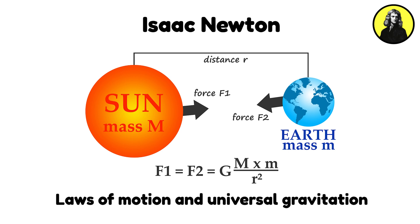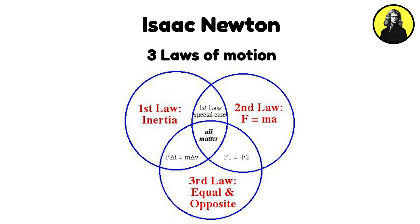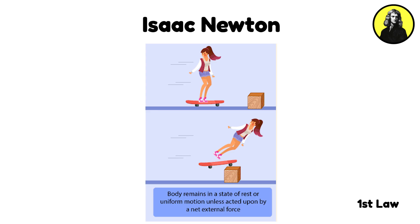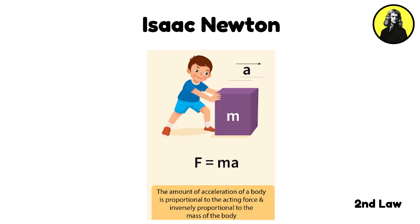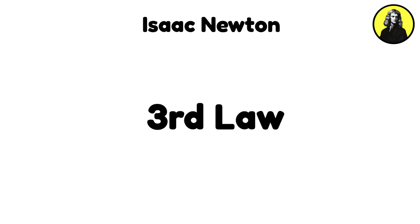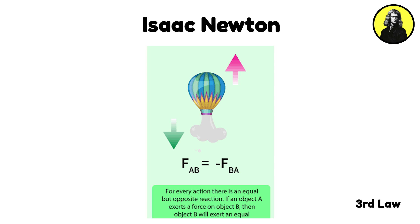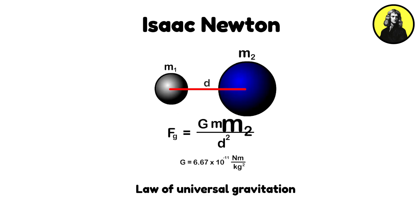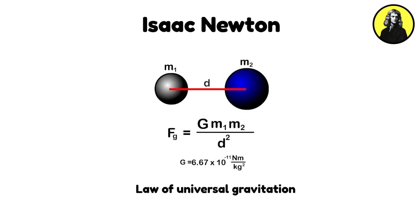Newton formulated the three laws of motion. First law: an object remains at rest or in uniform motion unless acted upon by an external force. Second law: the acceleration of an object is proportional to the net force acting upon it and inversely proportional to its mass. Third law: for every action, there is an equal and opposite reaction. These principles, along with his law of universal gravitation, which states that every mass attracts every other mass in the universe, provided a comprehensive framework for understanding physical phenomena.